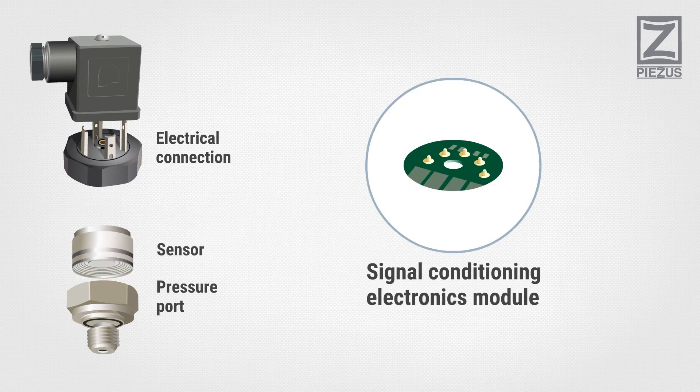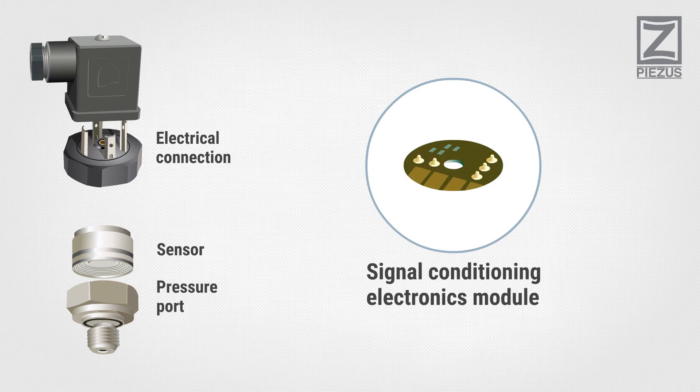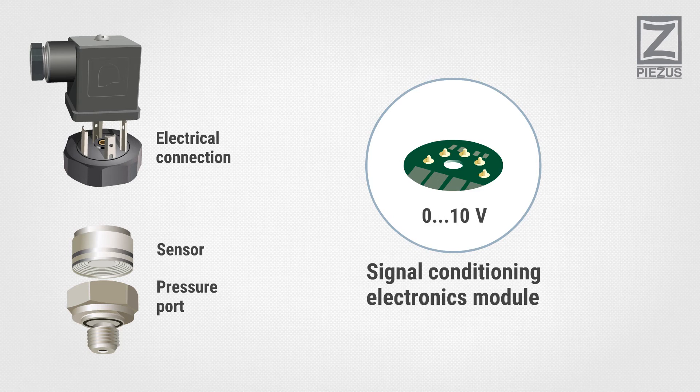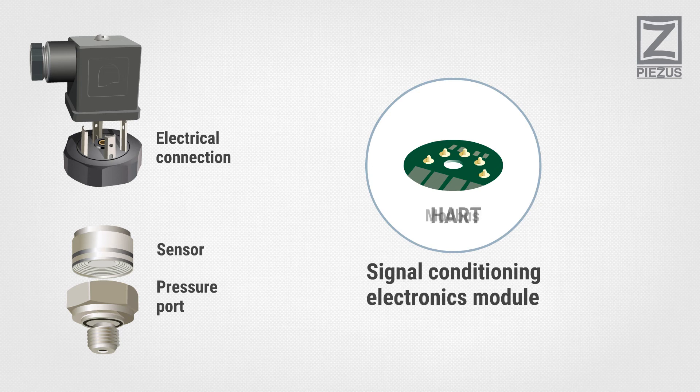Signal Conditioning Electronics Module converts sensor signal into standard normalized electrical output, such as 4 to 20 milliamps, 0 to 10 volts, or 0 to 20 milliamps. Various models are also capable of digital communication using HART or MODBUS protocols.